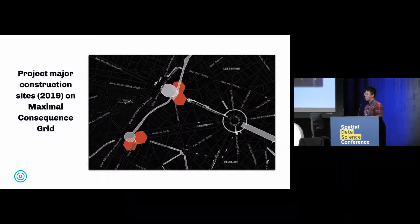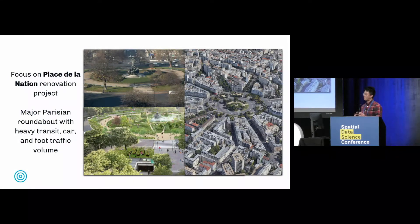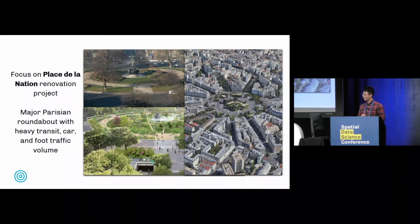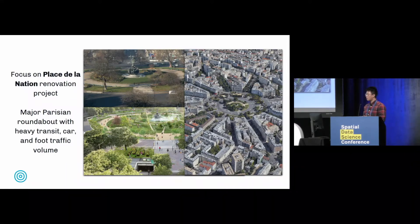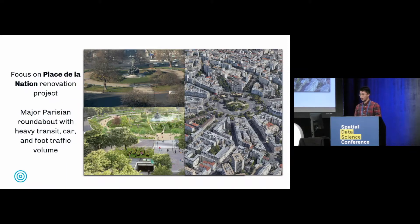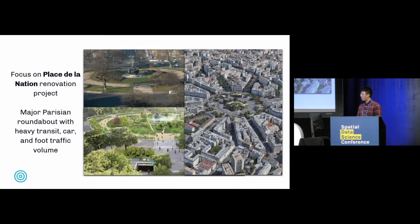After having created our grid, we can overlay all of the major construction projects in Paris in 2019. Let's look at an example: the Nacion. The Nacion was notoriously known for having the highest number of active guillotines during the French Revolution — a very dangerous place. Today it serves as a roundabout for cars, bikes, and pedestrians. In the summer it underwent a major construction project to add more bike lanes, pedestrian lanes, and new subway entrances.